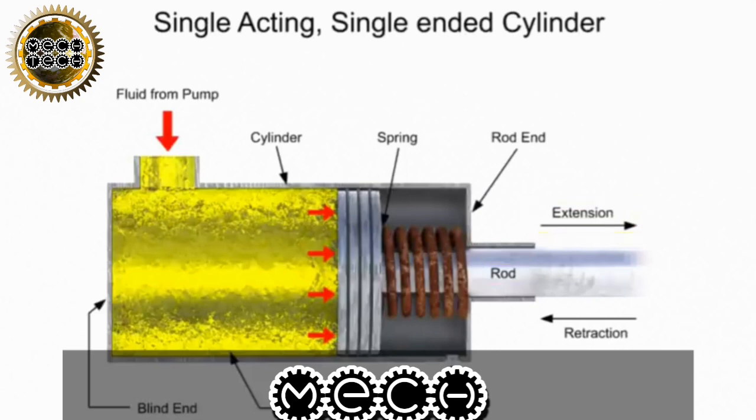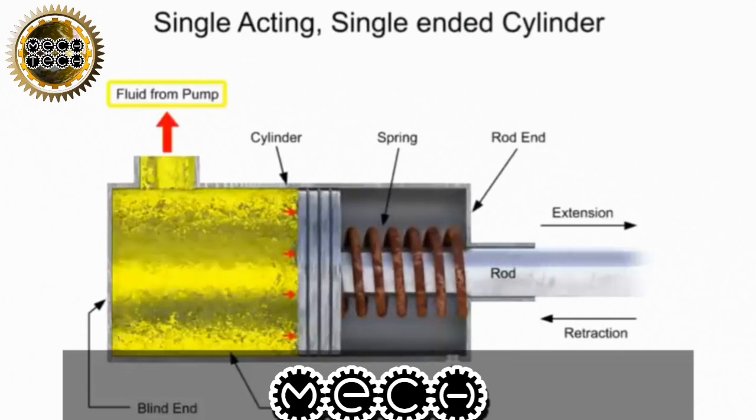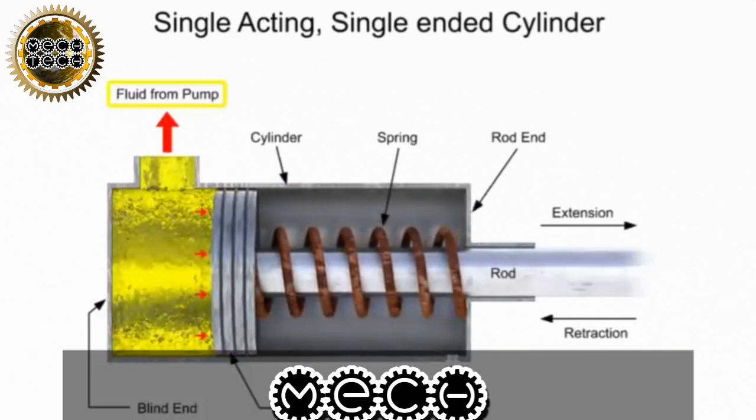When a control valve directs fluid out of the port, the fluid pressure is removed. The force of the spring pushes against the piston in the other direction, and the rod returns to the cylinder. This is called the retraction stroke.